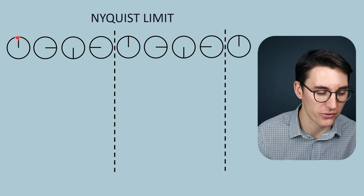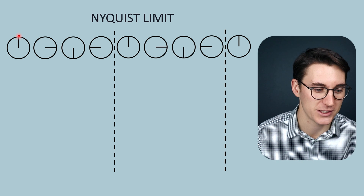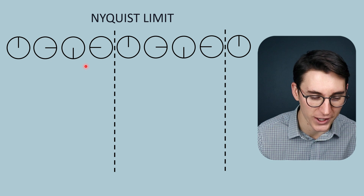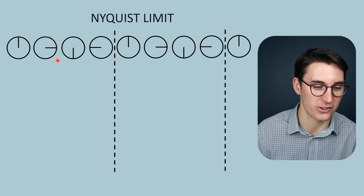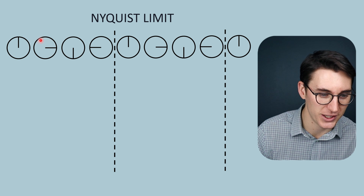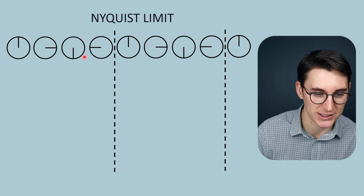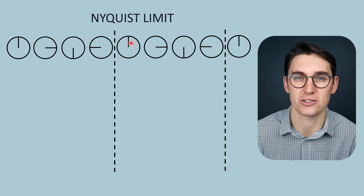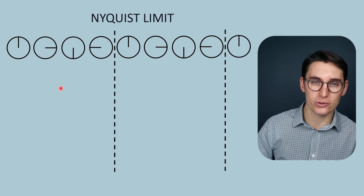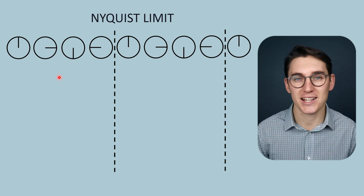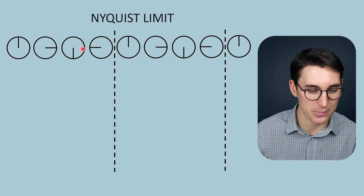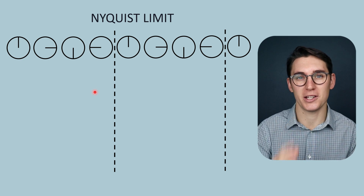We have a wheel with a spoke facing at 12 o'clock on the clock face. As that wheel rotates in a clockwise direction, we can see that spoke turning — 90 degrees, 90 degrees, 90 degrees, and then back to its original position. I've drawn dotted lines to represent one full turn of the wheel, which can be seen as one wavelength of that wheel's rotation. Each snapshot here represents a sampling period.